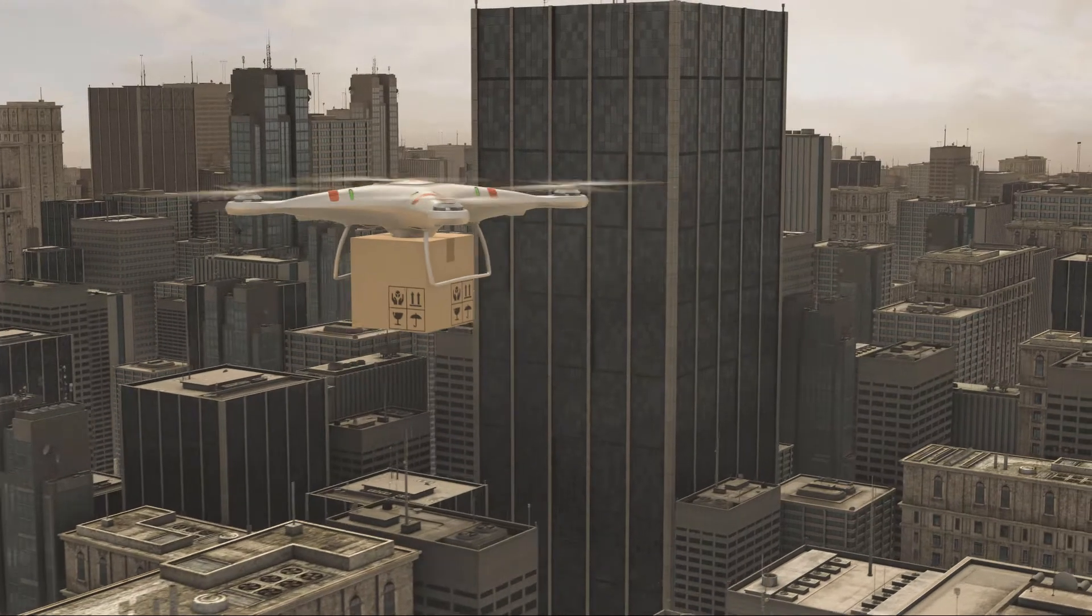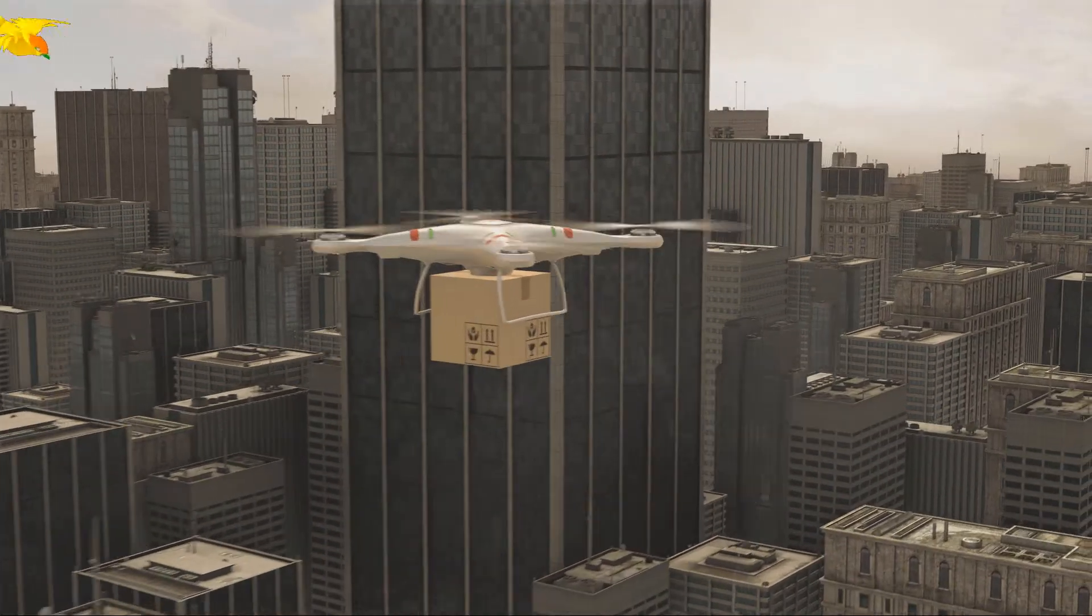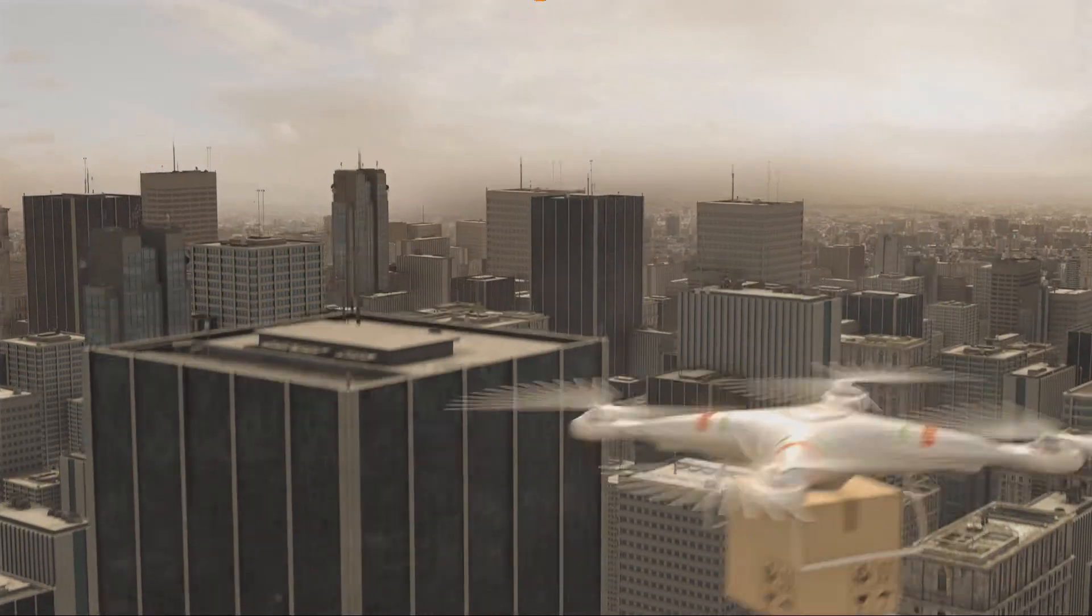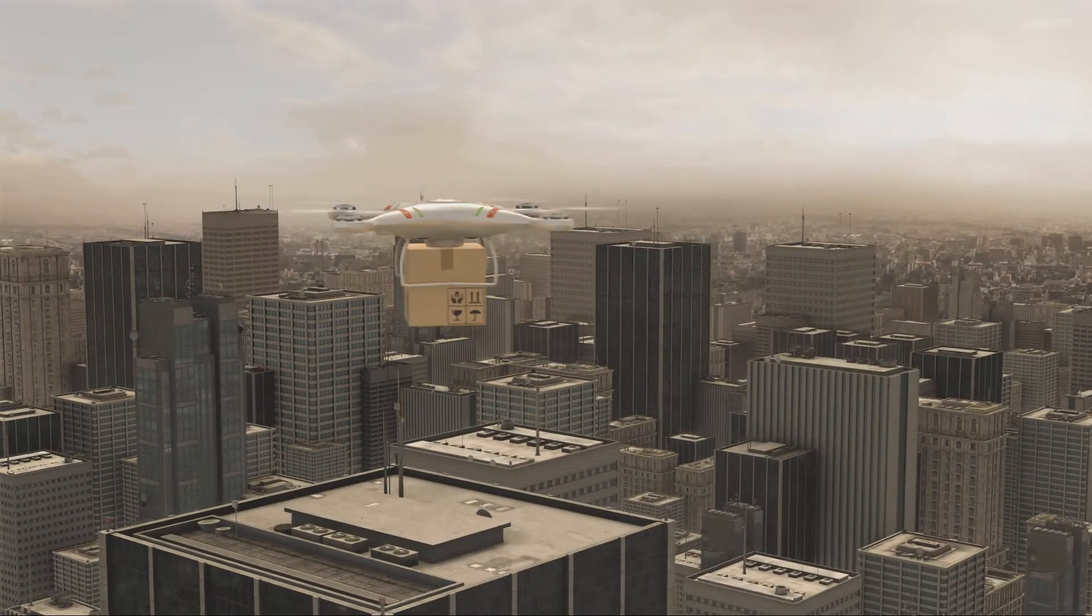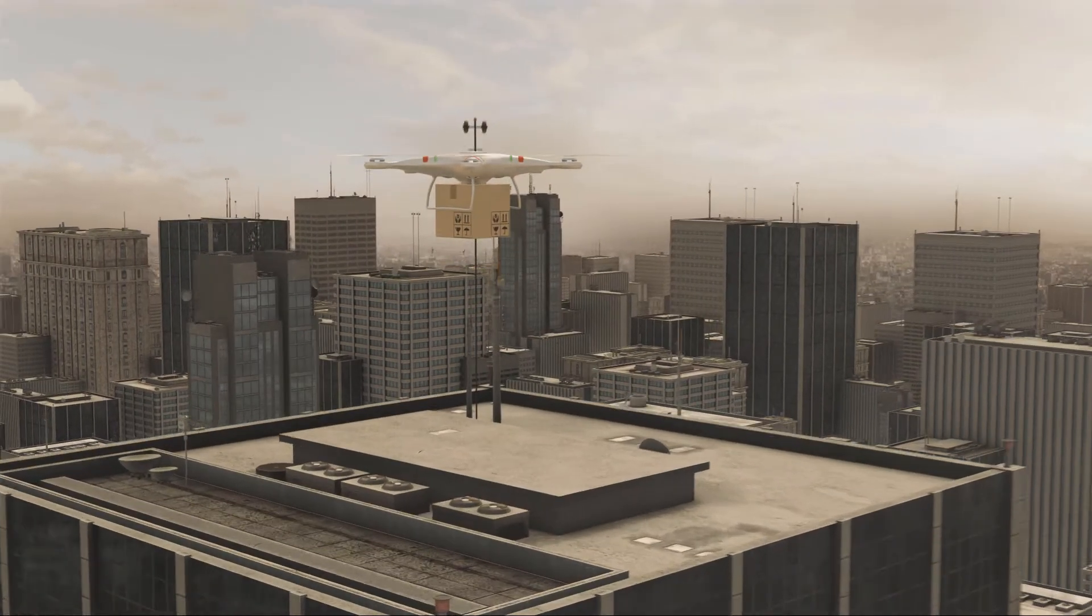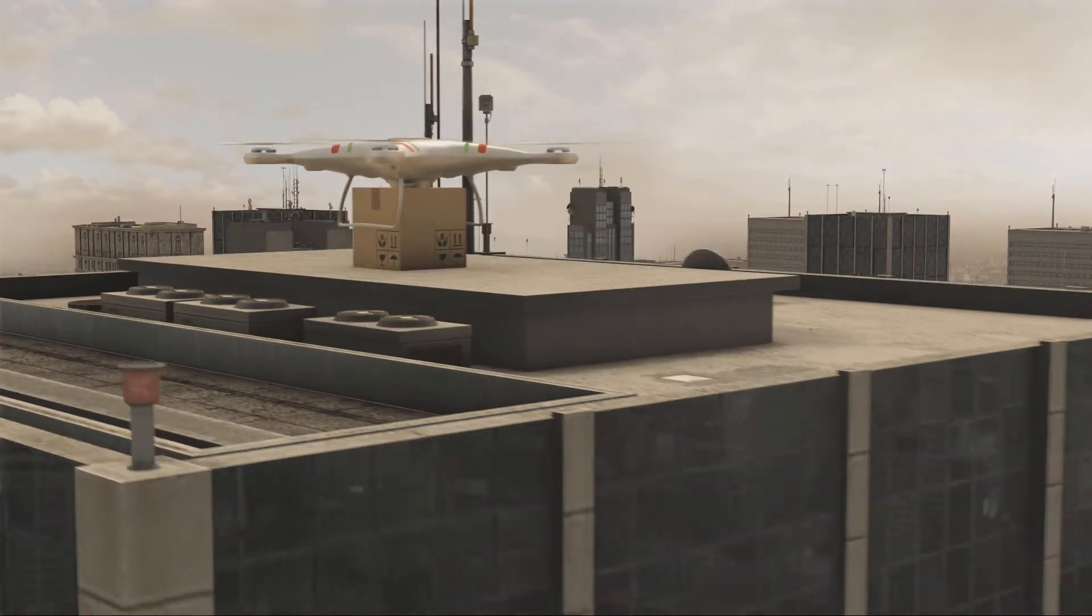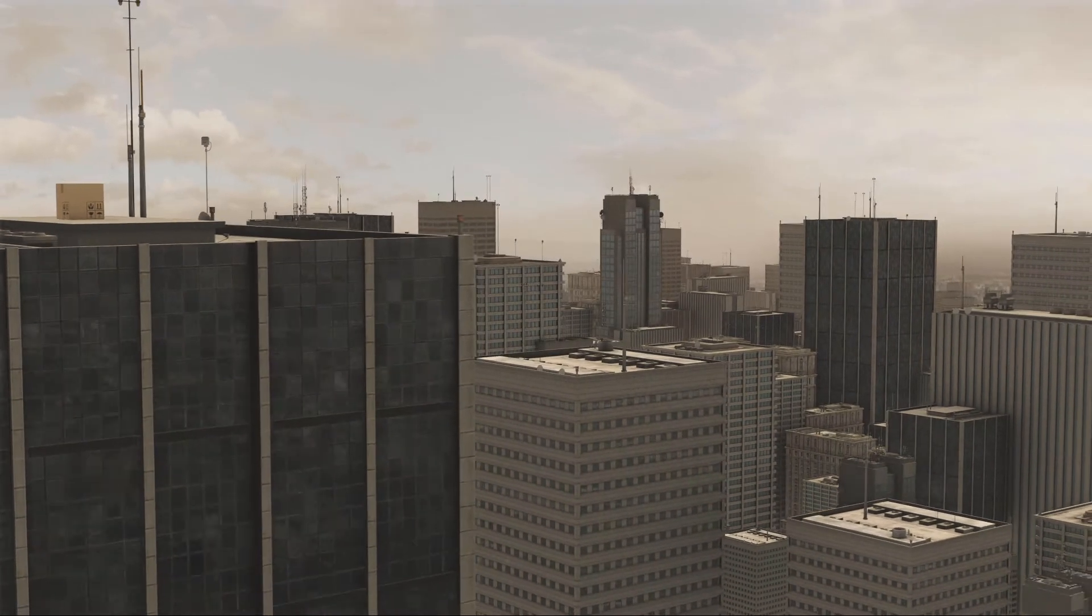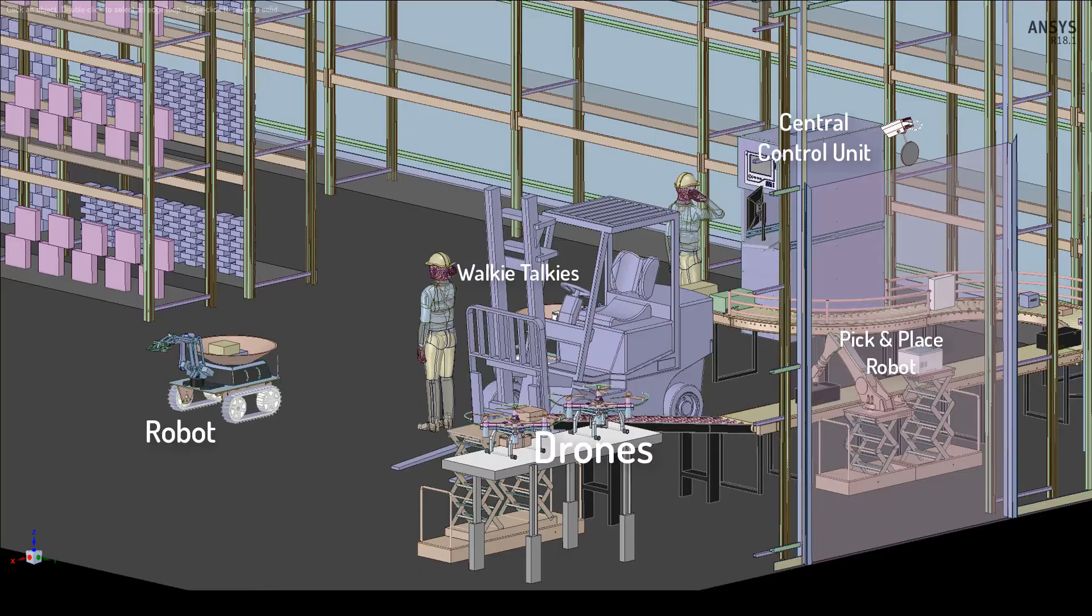For instance, the Federal Aviation Administration requires commercial drones fly below 400 feet, avoiding obstacles while navigating to the customer site. When the wind is strong, the drone must still follow its flight path and deliver the package. Solutions to these design and engineering problems can be found by 3D physics simulations using ANSYS tools.